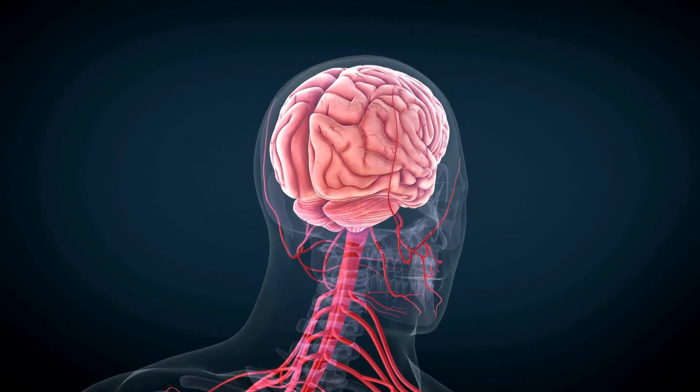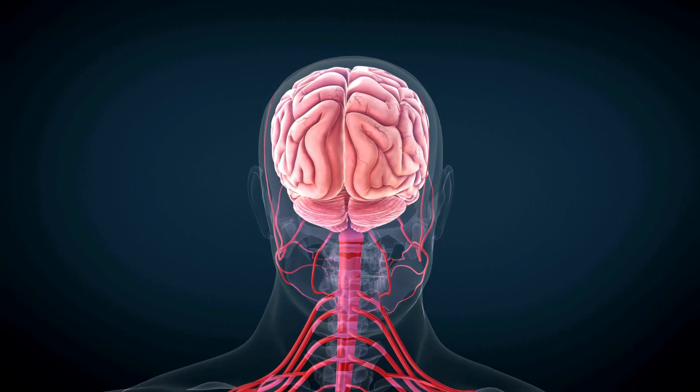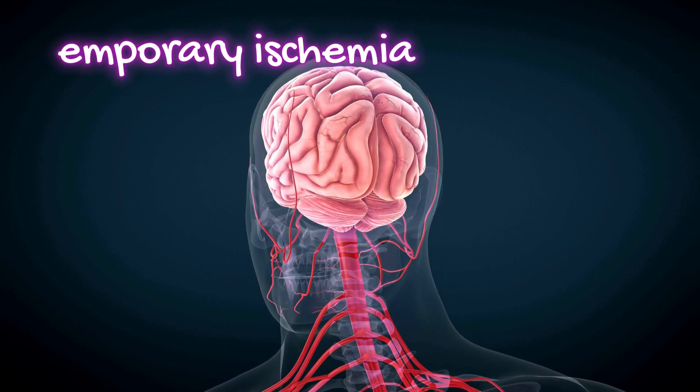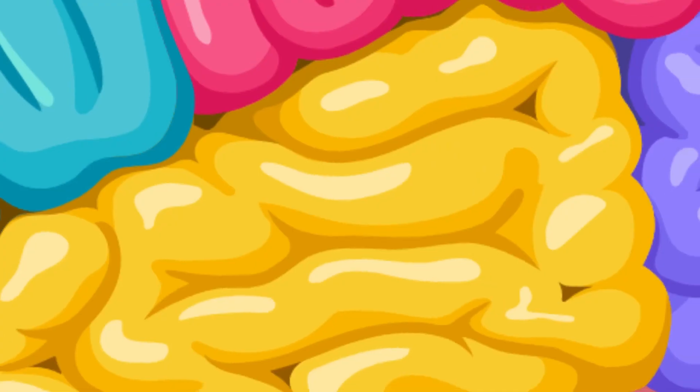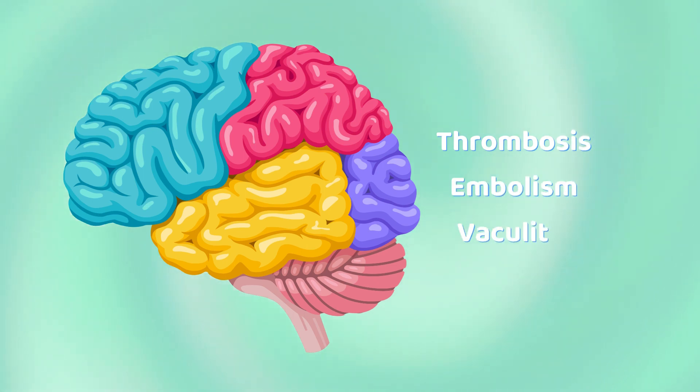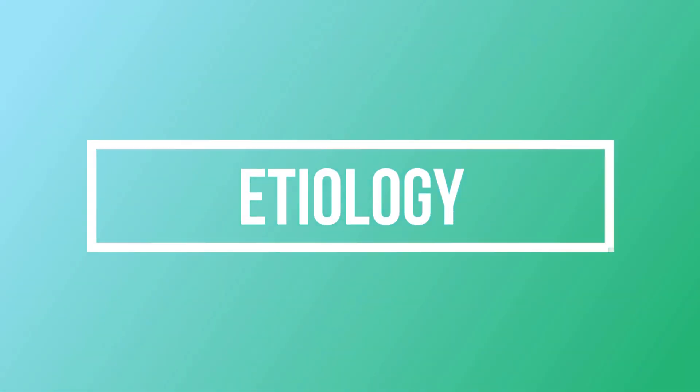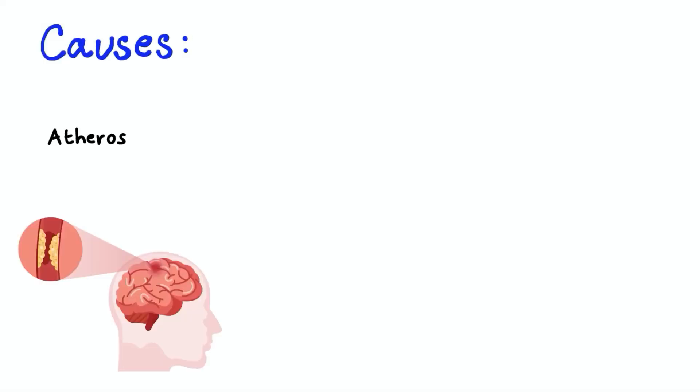TIAs are produced by temporary ischemia to a vascular territory, usually caused by thrombosis or embolism and less commonly by vasculitis or hematological disorders. When talking about etiology and pathophysiology, by far the most common cause of TIA is carotid atherosclerosis.